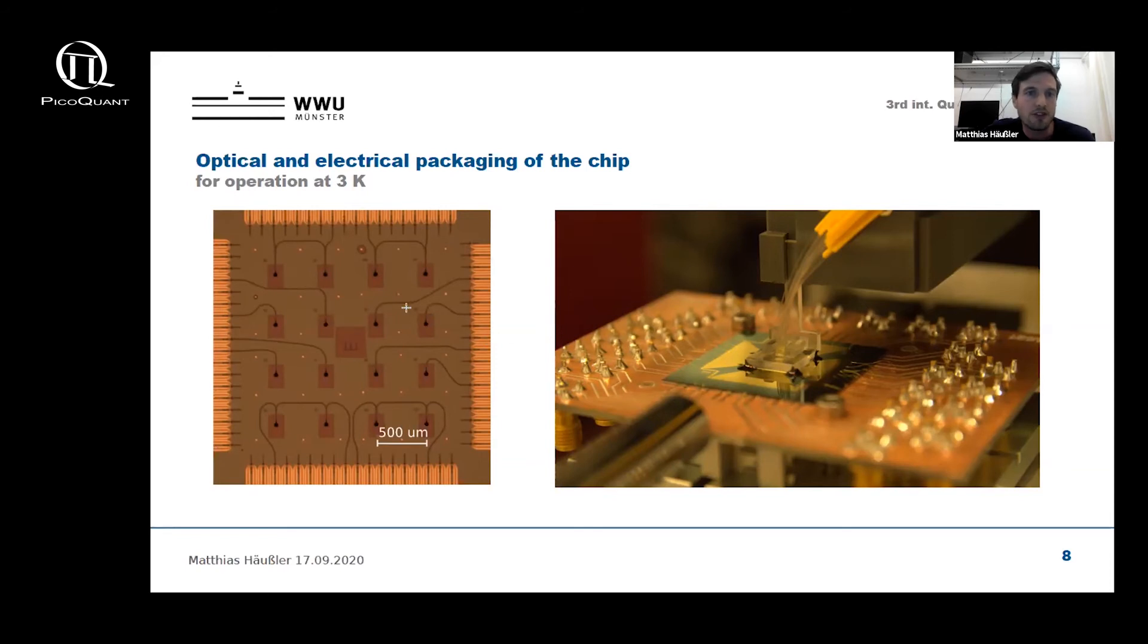The fabrication is divided into four steps. In a first electron beam lithography step, the contact pads for electrical access of the detectors are fabricated, which you can see in orange on the edges of the picture. In a second EBL step, the nanowires attached to the gold pads are fabricated.